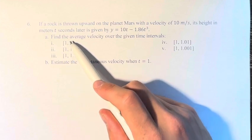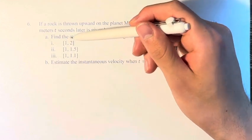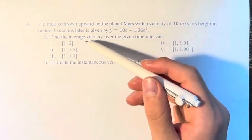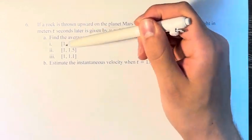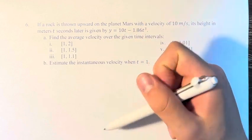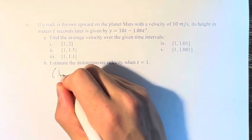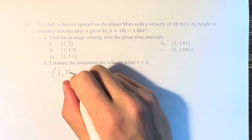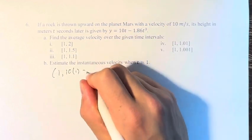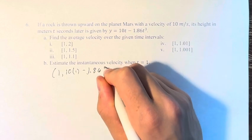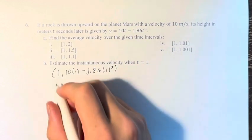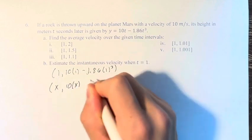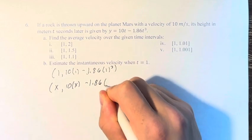We're asked to find the average velocity over the given time intervals from one to some other time. The average velocity you can think of as the slope between these two points. The points that we're going to have is 1 and then the output of 1 in this function, so 10 times 1 minus 1.86 times 1 cubed. And for whatever other time we're picking x, it's going to be 10 times x minus 1.86 times x cubed.